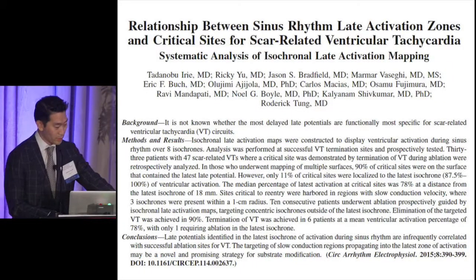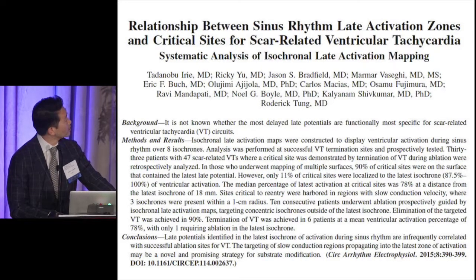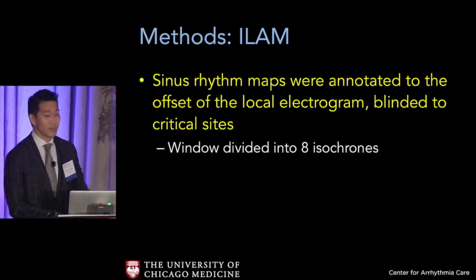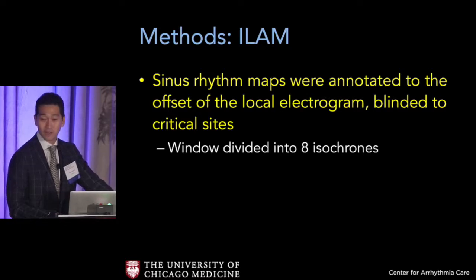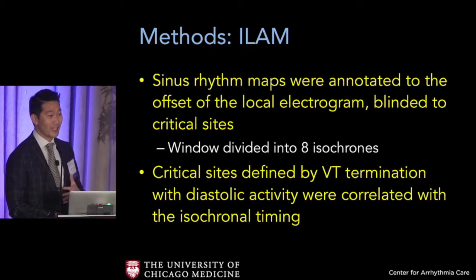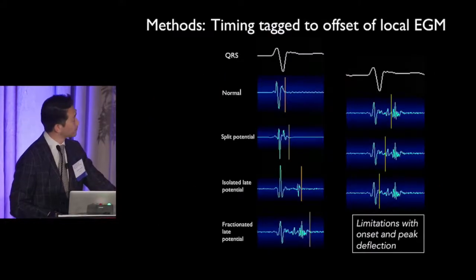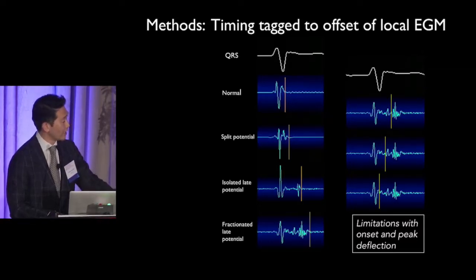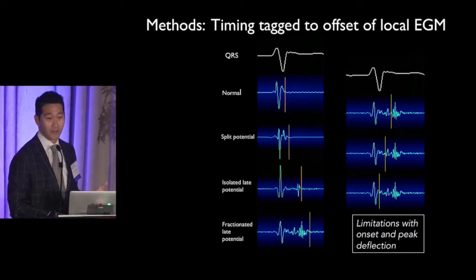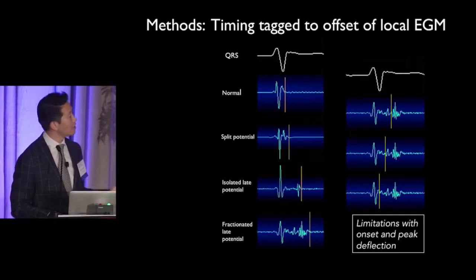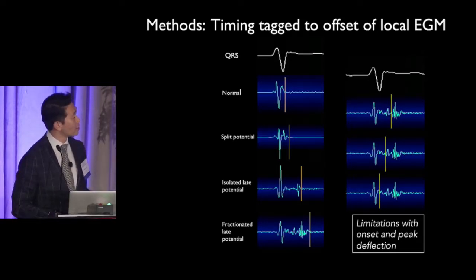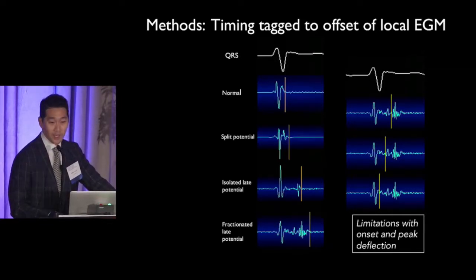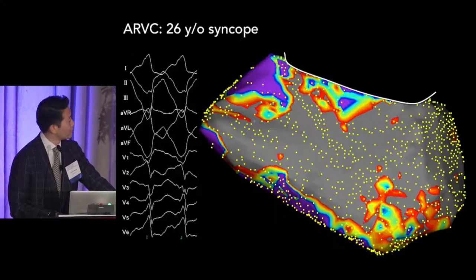This paper describes the relationship of late activation zones, done by rising star Taka Habuiri during his time with us at UCLA. The method is to divide the sinus rhythm local activation time (LAT) into eight isochrones, which gives a visual sense of conduction velocity. Critical sites were identified by entrainment or rapid termination of VT, and we asked where they fall on an isochronal map. Importantly, everything was manually annotated to the offset of the late potential, because tagging to onset or peak of a fractionated electrogram has less inter-observer reproducibility.